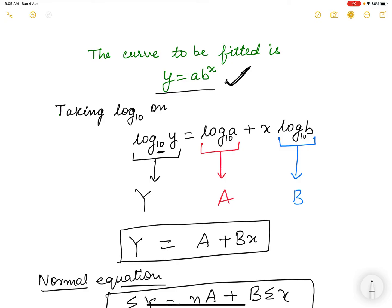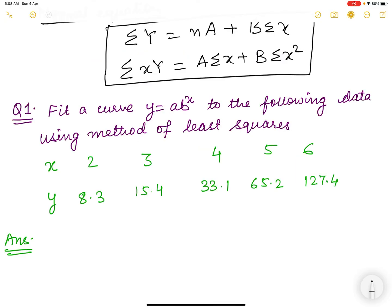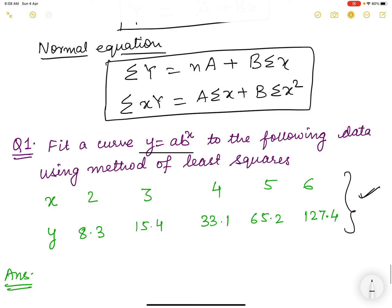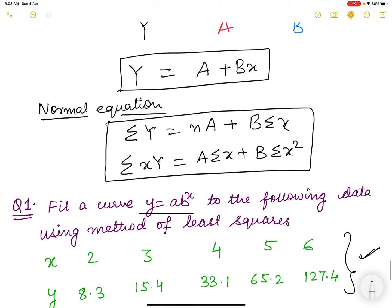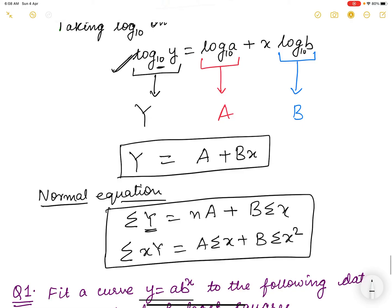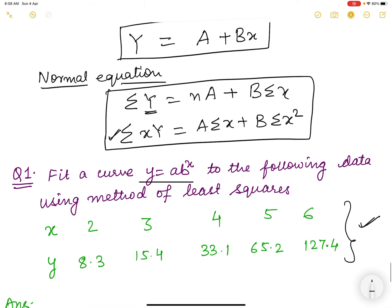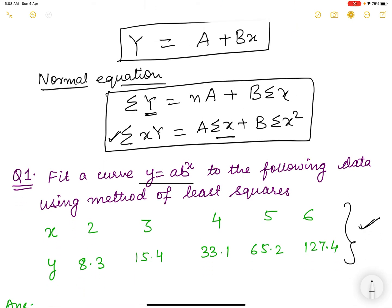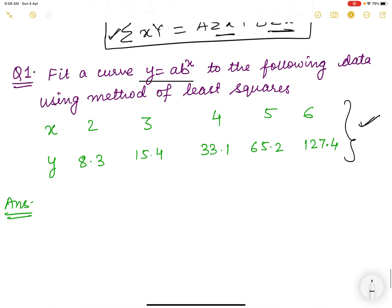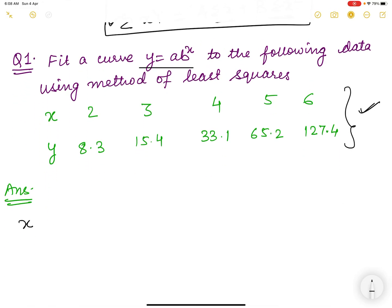Now let us move to the question number 1. In this question, we have to fit this curve y equals ab to the power x and the data is given. Let us see what all we need as a heading of the column. We need capital Y which is obviously log Y. We need multiplication of small x and capital Y that is x log Y. Similarly, we need sigma x and sigma x square. Let us quickly make the heading of the column: x, y, capital Y which is log to the base 10 y, and then we need x square and x capital Y.